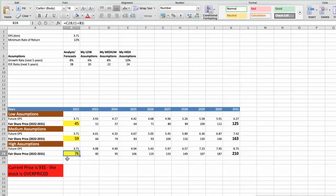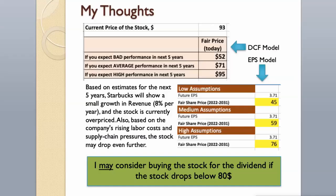As you can see, today the stock is overvalued at $93, even if we expect the company's high performance in the future. Based on estimates for the next 5 years, Starbucks will show small growth in revenue of 8% per year, and the stock is currently overpriced. Also, based on the company's rising labor costs and supply chain pressures, the stock may drop even further. I may consider buying the stock for the dividend if the stock drops below $80.